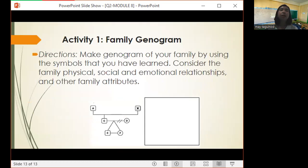Let us try to examine how well you have learned from this lesson by doing this activity. You are going to make your own family genogram. For direction, you are going to make a genogram of your family by using the symbols that you have learned. Consider the family physical, social, and emotional relationships and other family attributes. You are going to do your activity in a short bond paper.